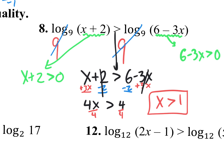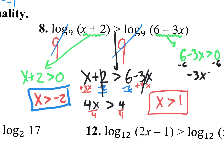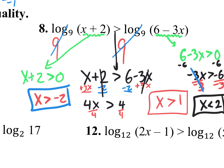If I set x plus 2 greater than 0 and solve it, I get x is greater than negative 2. And for the other one, subtracting 6 gives negative 3x greater than negative 6. Dividing by negative 3 and flipping the inequality symbol gives x is less than 2. So we have three inequalities — three areas of answers.